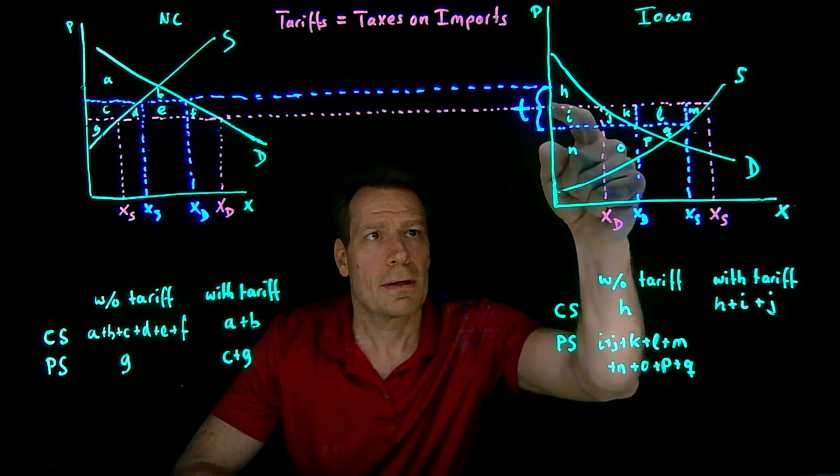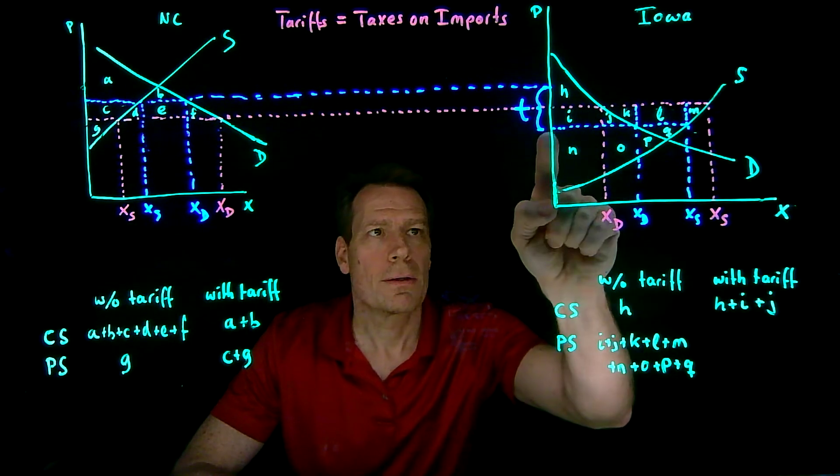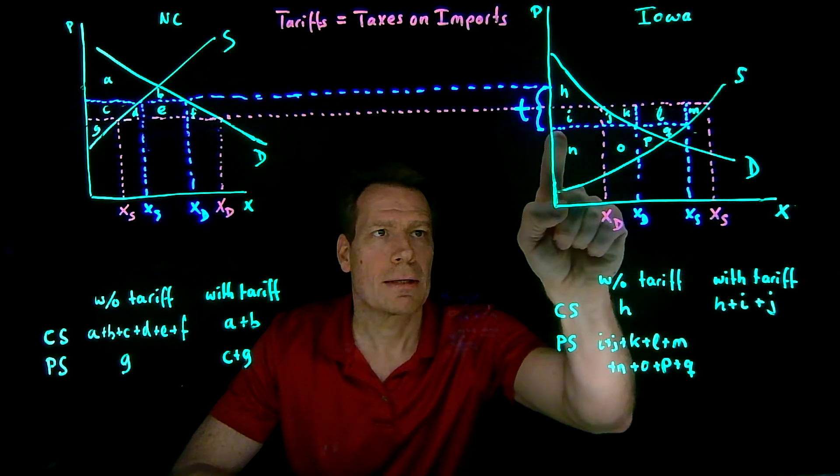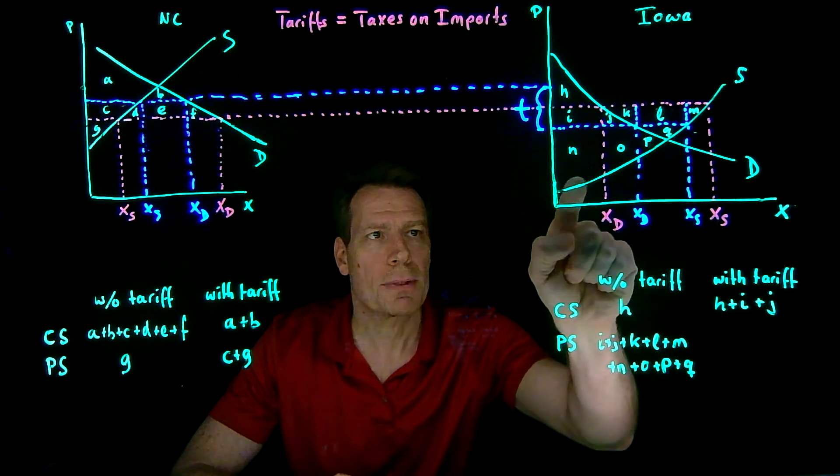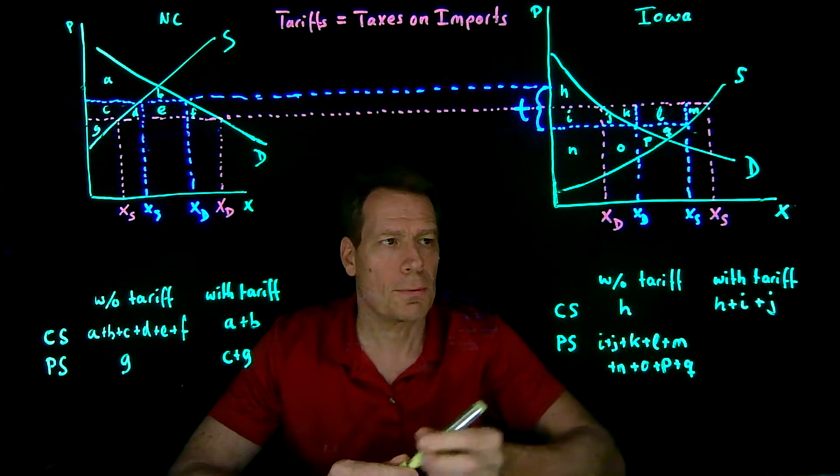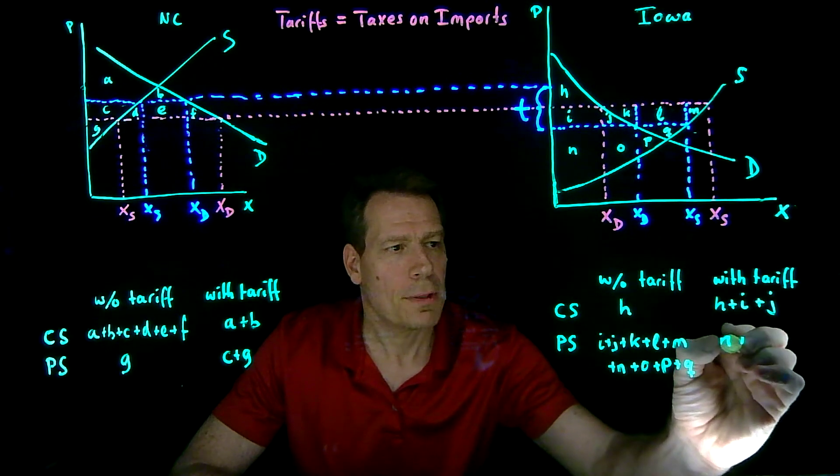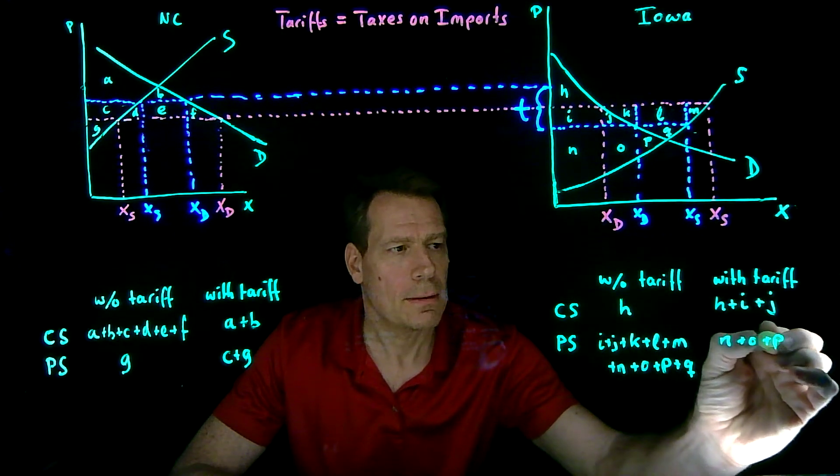After the tariff, they're getting a lower price, so they're producing less and they get everything below that blue price down to the supply curve. So we have N, O, P, and Q. N plus O plus P plus Q.